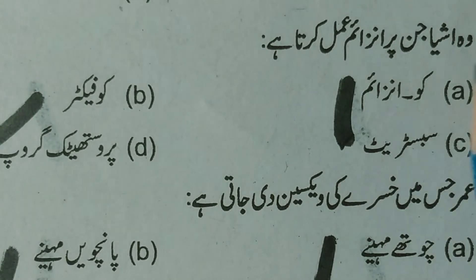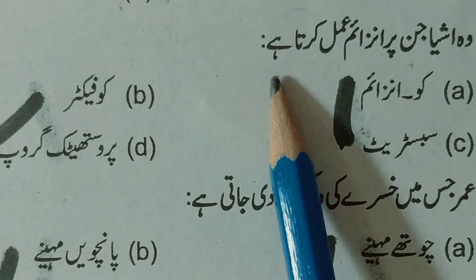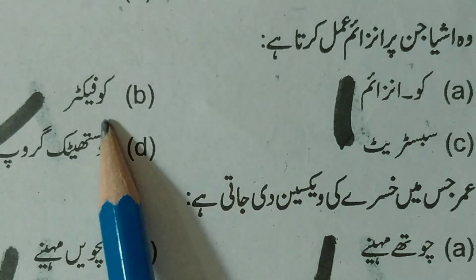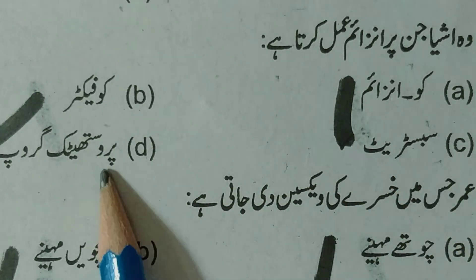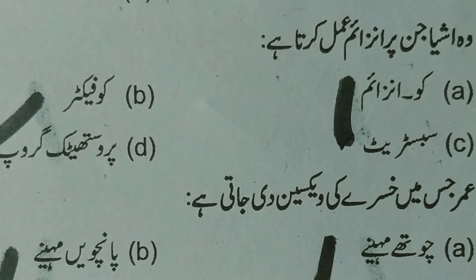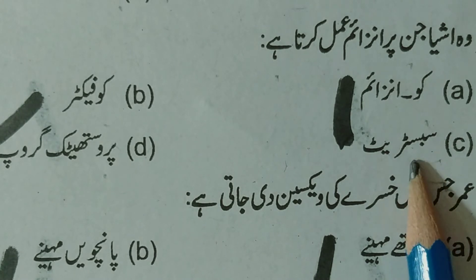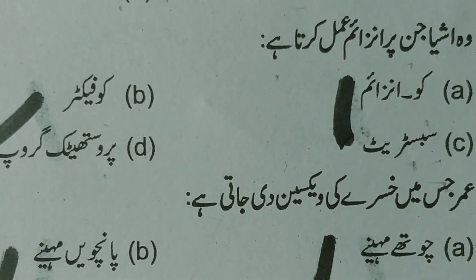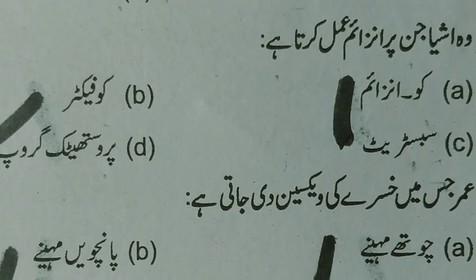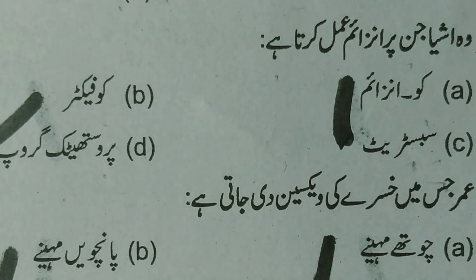MCQ 9: The substance on which an enzyme works — options are coenzyme, cofactor, substrate, or prosthetic group. The substrate is what the enzyme works on. Every single substance on which an enzyme acts is called a substrate. When the enzyme works on the substrate, it changes it. Option C, substrate, is the right answer.